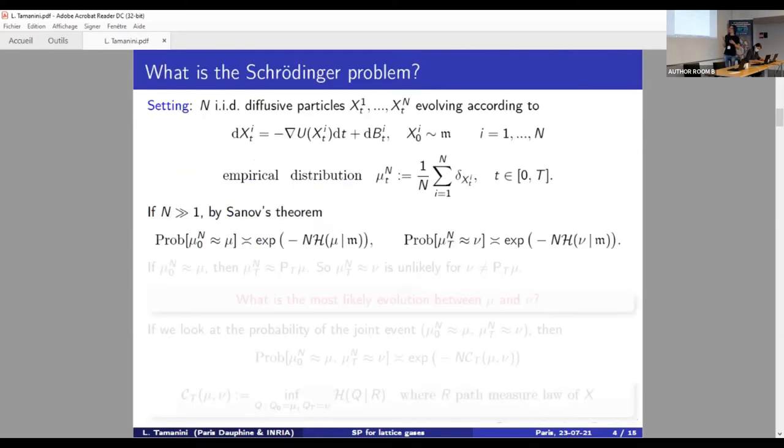So let me first start with the original Schrödinger problem. The setting is the following. We consider N independent and identically distributed particles which evolve according to this diffusive SDE. And we sample them at the initial time with respect to the uniform, so the invariant measure for the SDE. We denote by μ_t^N the empirical distribution at time t. And well then by classical large deviations and Sanov's theorem, we know that the probability that the initial configuration is close to μ is exponentially small as a function of the Boltzmann entropy of μ with respect to the invariant measure ν. And same for the final configuration.